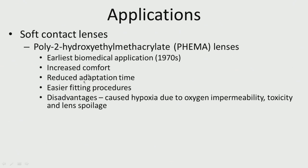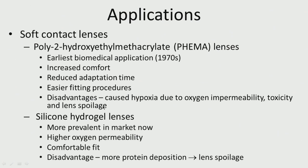Applications of hydrogels include soft contact lenses — polyhydroxyethyl methacrylate (pHEMA) was one of the earliest biomedical applications. It increases wearing comfort compared to hard lenses, with reduced adaptation time and easier fitting. Disadvantages include cost, hypoxia due to oxygen impermeability, toxicity, and lens spoilage. Silicone hydrogel lenses are now more prevalent in the market, offering higher oxygen permeability and comfortable fit, though with the disadvantage of more protein deposition and lens spoilage.